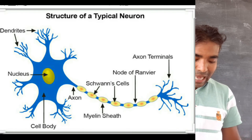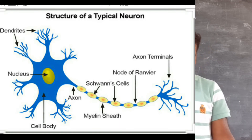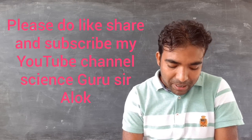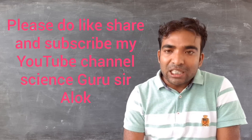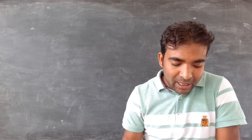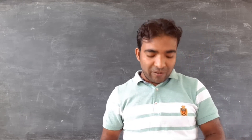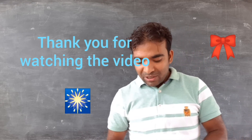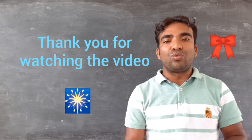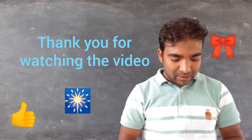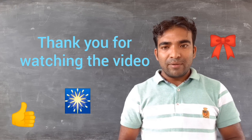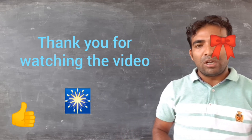That is all about animal tissue. To summarize the key points: the four types are epithelial tissue (classified into simple squamous epithelium, cuboidal epithelium, and columnar epithelium), connective tissue (including blood, bone, ligament, and cartilage), muscular tissue (classified into voluntary and involuntary muscles), and nervous tissue. Hope you understood from this video. Thank you.